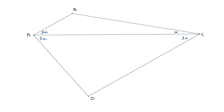Here's the question: we're given this triangle and we're also given the fact that BC and DC are equal. We've got these angles here: 3x, 3x, x, and 5x, and obviously we want to solve for what the value of x is.